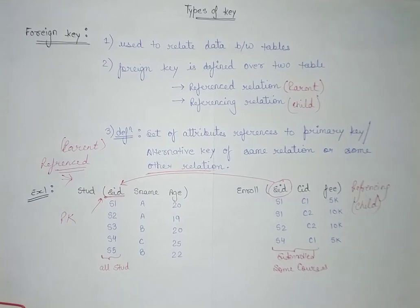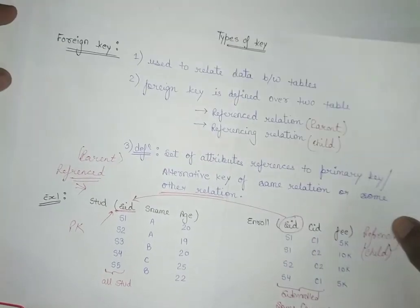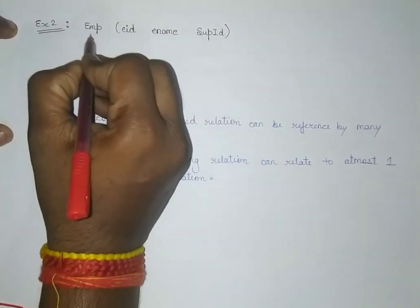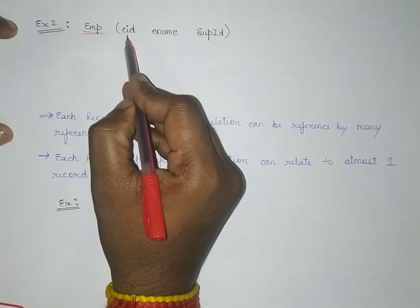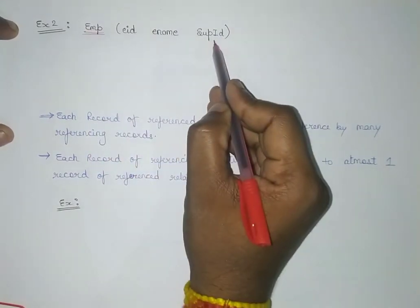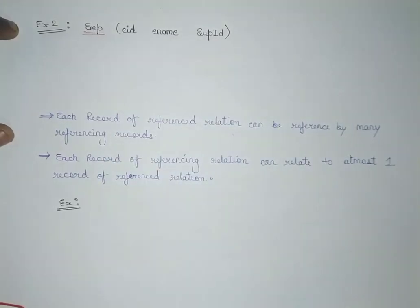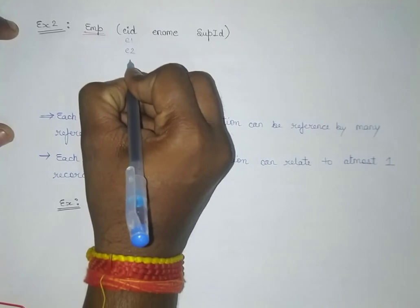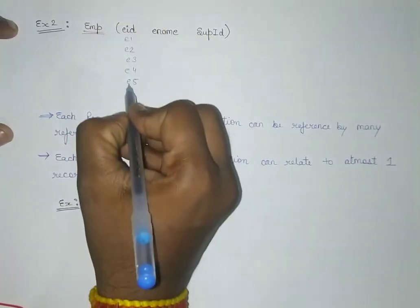Now let's understand how the foreign key works for the same relation. For example, we have a table named Employee with three attributes: employee ID, employee name, and supervisor ID. Let me fill in some details — employee IDs E1, E2, E3, E4, E5.